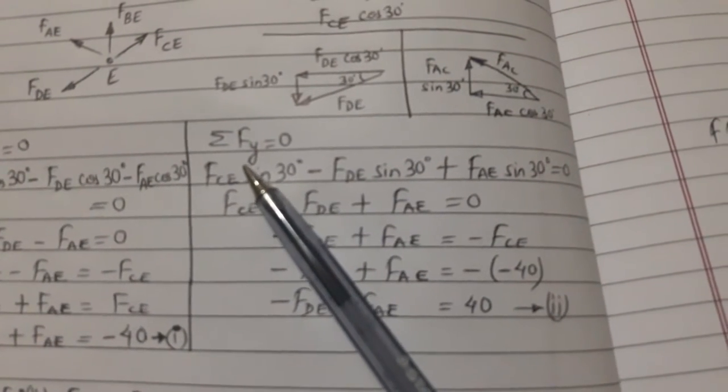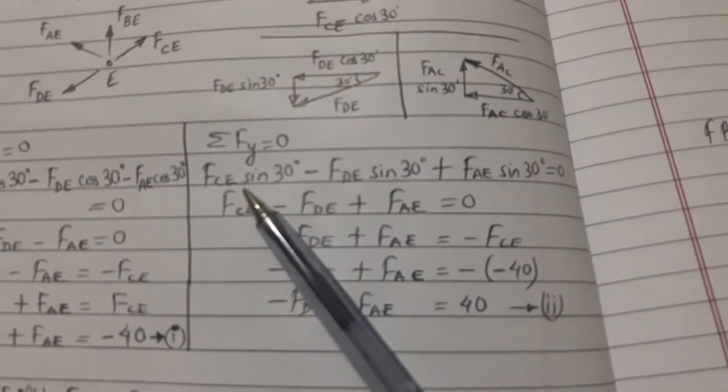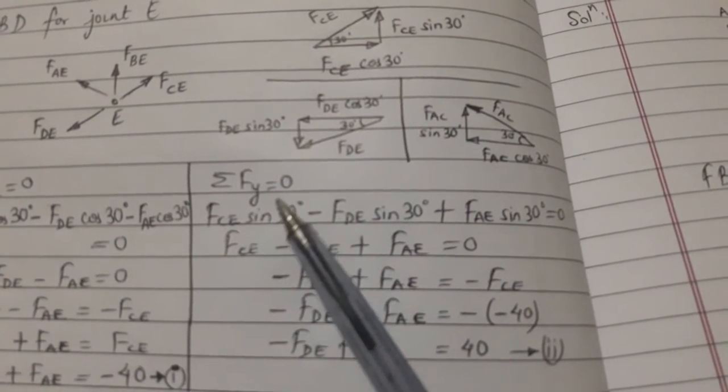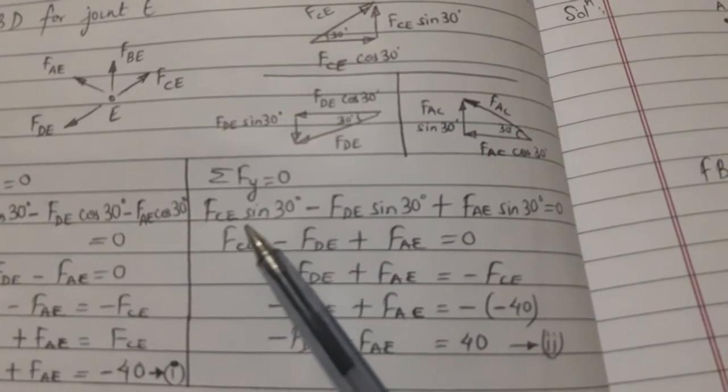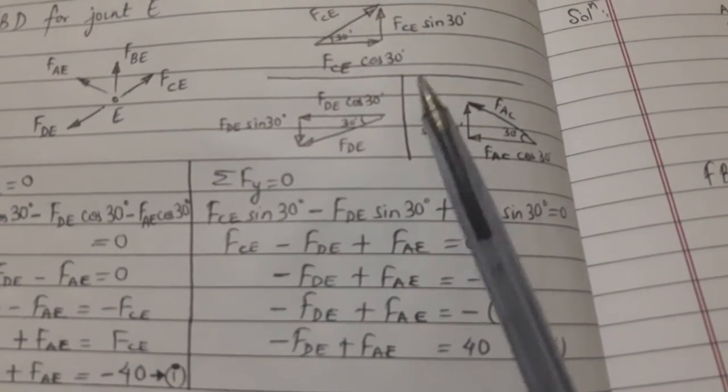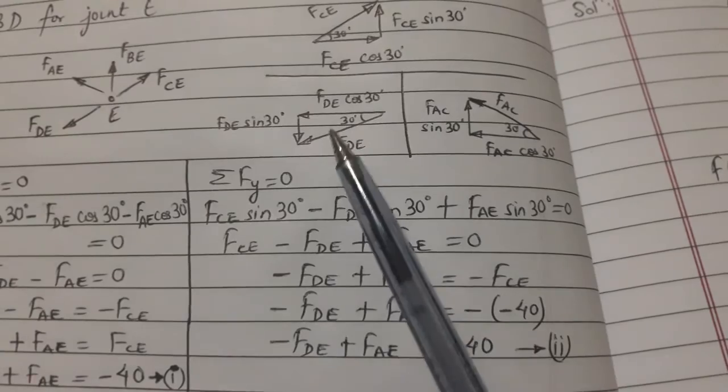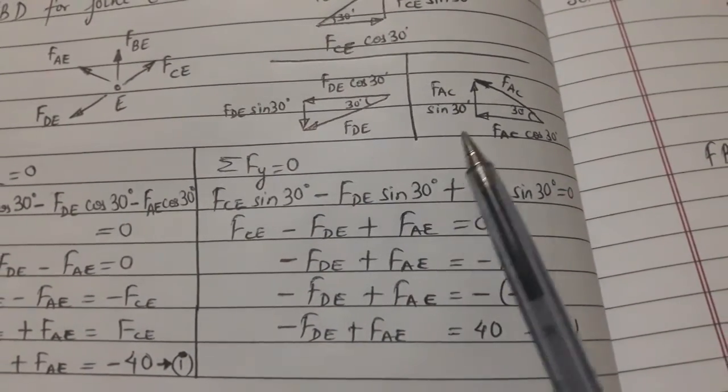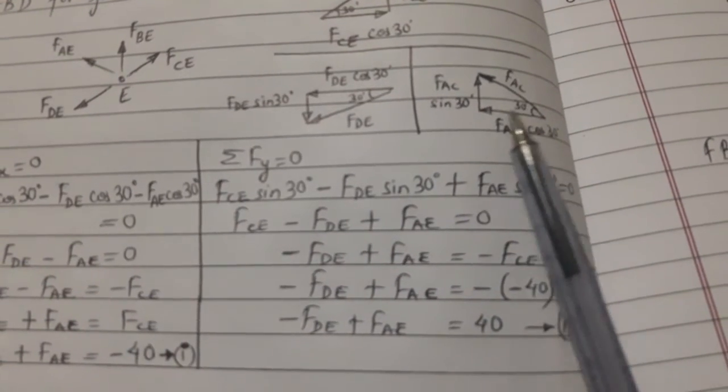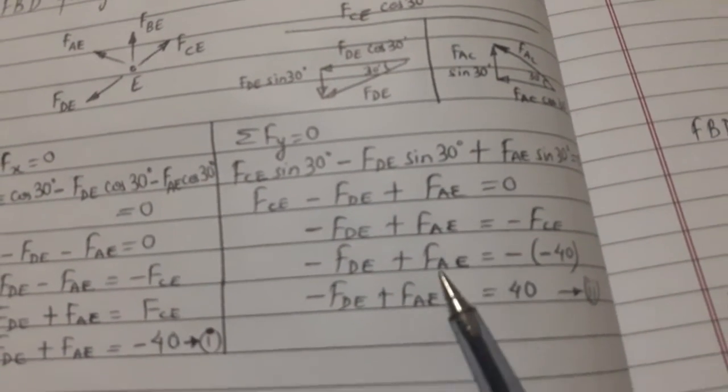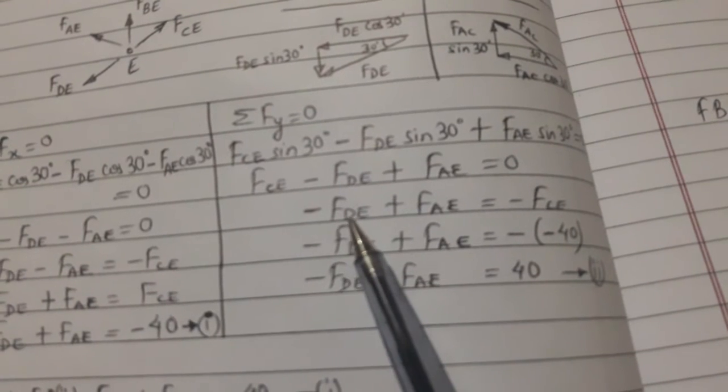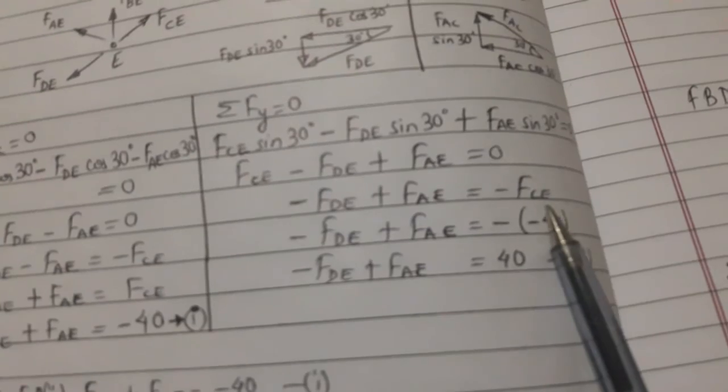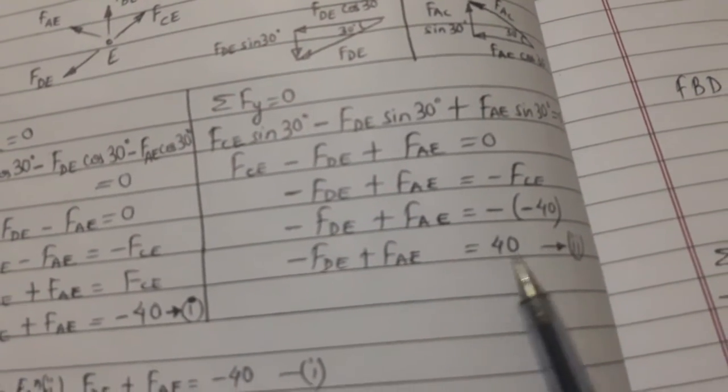Similarly, we got summation of Fy equal to zero. All the components of the forces which are upwards will be positive and downwards will be negative. FCE sin 30 positive, FDE sin 30 negative, FAE sin 30 positive. When we simplified, we got minus FDE plus FAE equals minus FCE. We know FCE is minus 40, we put here.